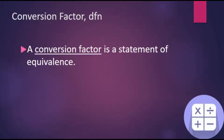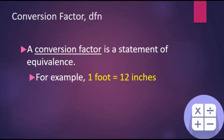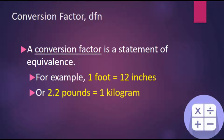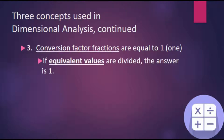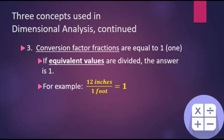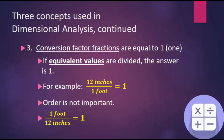A conversion factor is a statement of equivalence. For example, 1 foot is equal to 12 inches, or 2 pounds is equal to 1 kilogram. When we take these conversion factors as fractions, they are equal to 1 because we have the same quantity in the numerator as in the denominator with a different unit. Since 12 inches equals 1 foot, when expressed as a fraction it's equivalent to 1. Order is not important — we could have just as well expressed this as 1 foot over 12 inches. In either case, it's equal to 1.